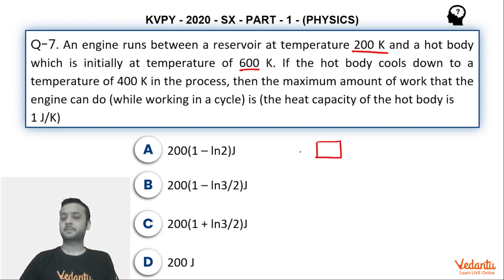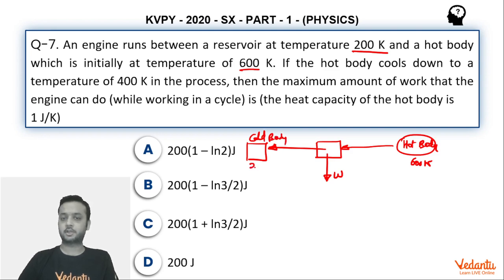This engine is extracting heat from the hot body at an initial temperature of 600 Kelvin. It will be performing some work in the cyclic process and then it is releasing the heat at the cold body which is at temperature 200 Kelvin.